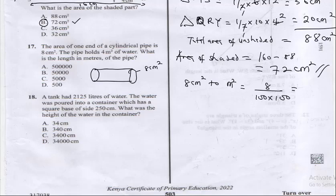We move our decimal places by 4 places: 1, 2, 3, and 4. So we are going to have 0.0008 meter squared.